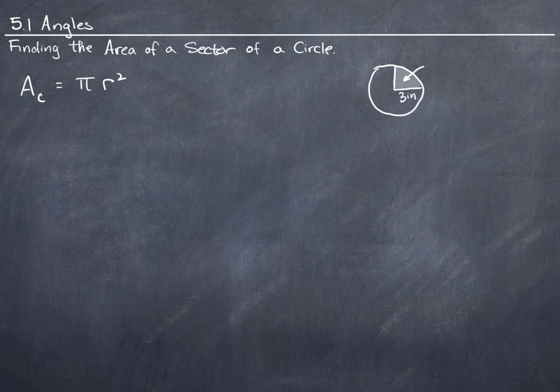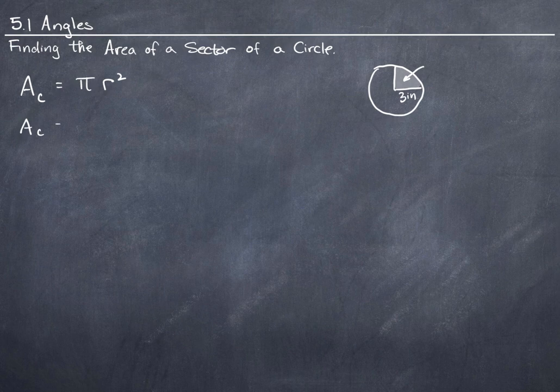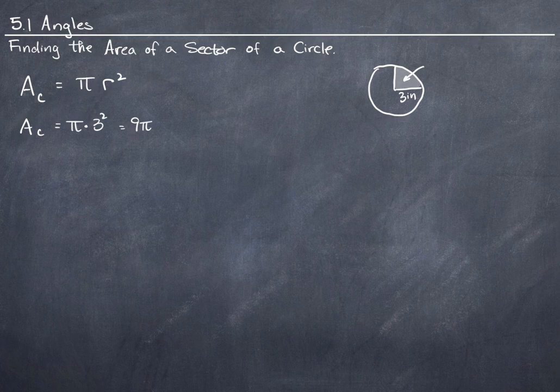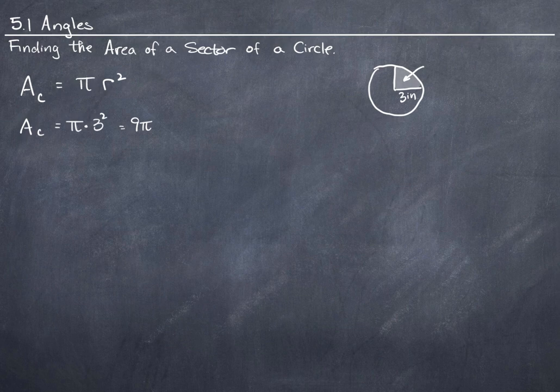So the area of the whole circle is pi times 3 squared, or 9 pi. Let's just leave that as it is. We don't need to convert it to a decimal.